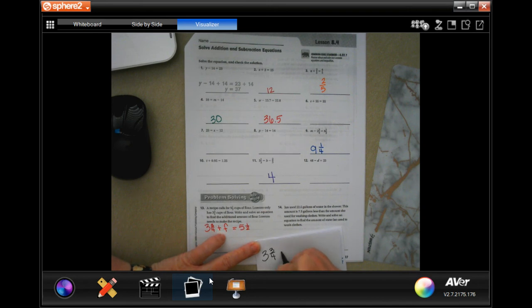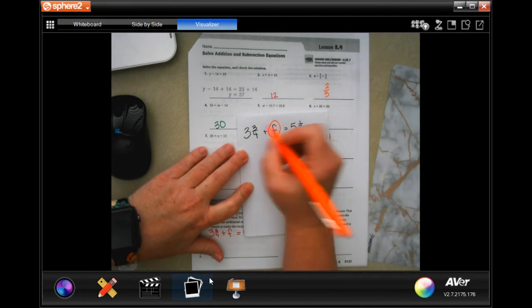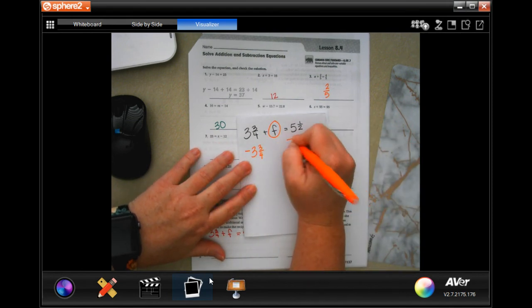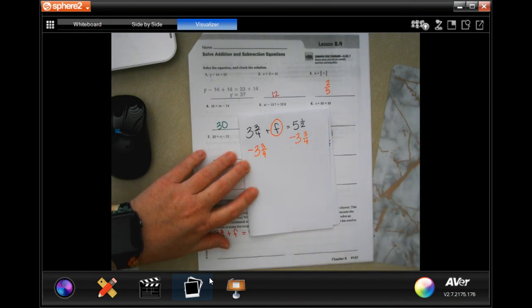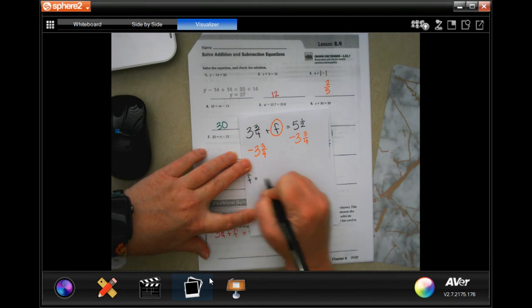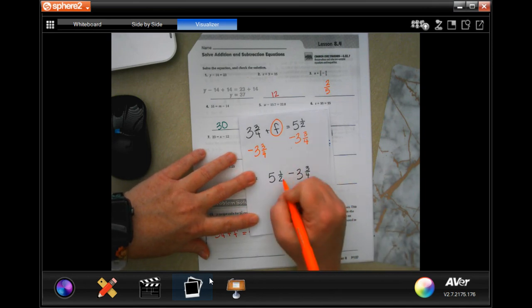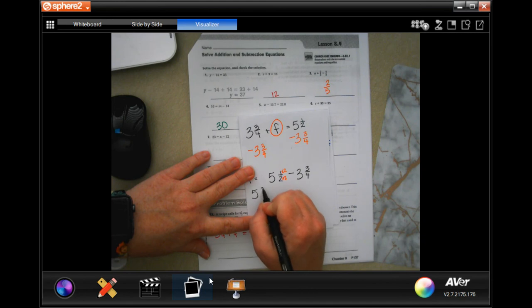3 3⁄4 plus F flour equals 5 1⁄2. We want F alone to know how much we still need. That means I have to do the opposite of the sign. Whatever I do to that side, I have to do to this side. Now I have F equals 5 1⁄2 minus 3 3⁄4. I'm going to need a common denominator, which is going to be 4. I need to multiply this by 2 to get to 4. I need to multiply that, so now I have 5 and 2⁄4 minus 3 and 3⁄4.